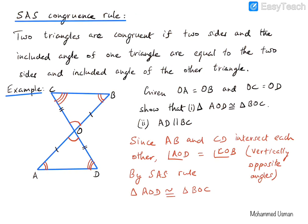So we have proved that triangle AOD is congruent to triangle BOC, and we have also proven that line AD is parallel to line BC because the alternate angles A and B are equal.